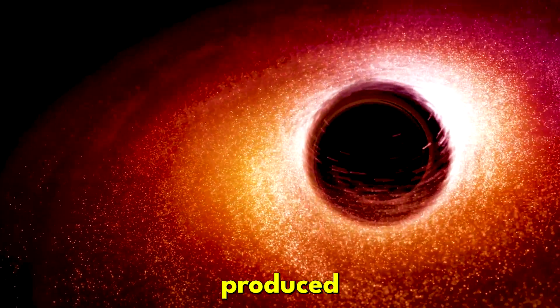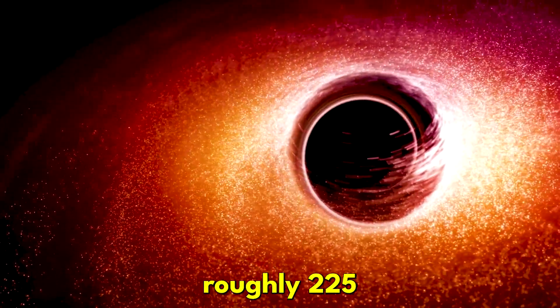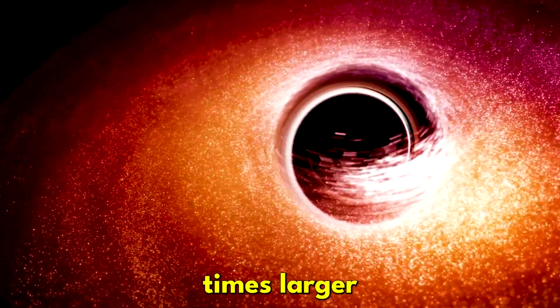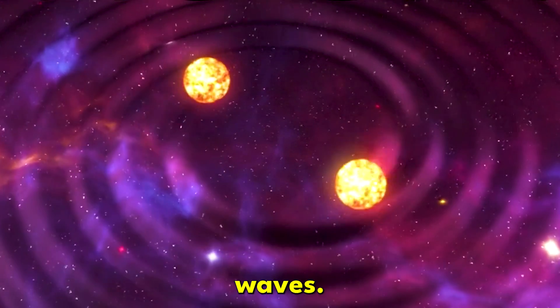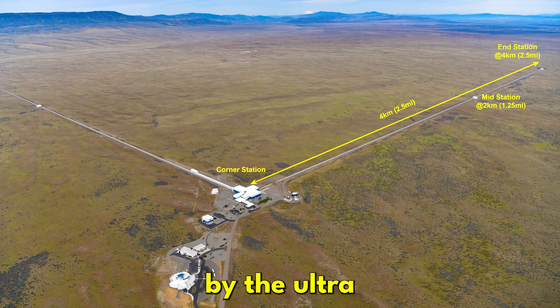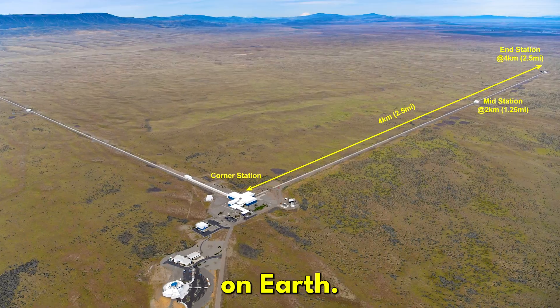This merger produced a black hole roughly 225 times larger than the sun. These ripples are known as gravitational waves and were picked up by the ultra-sensitive LIGO detectors on Earth.